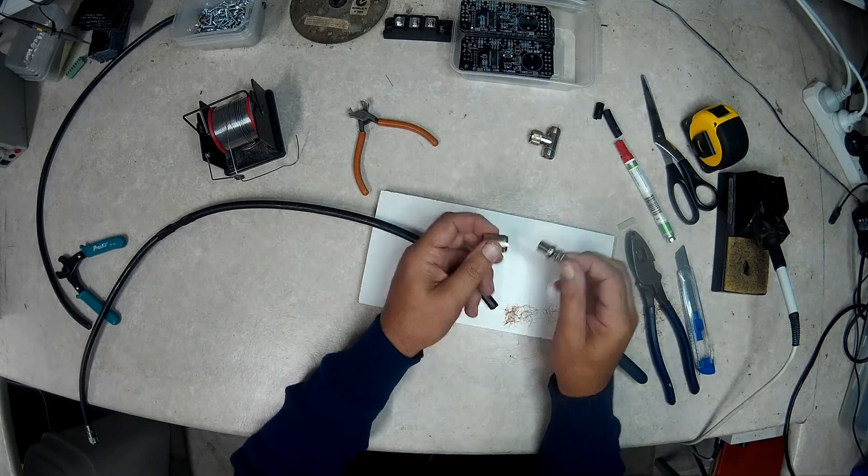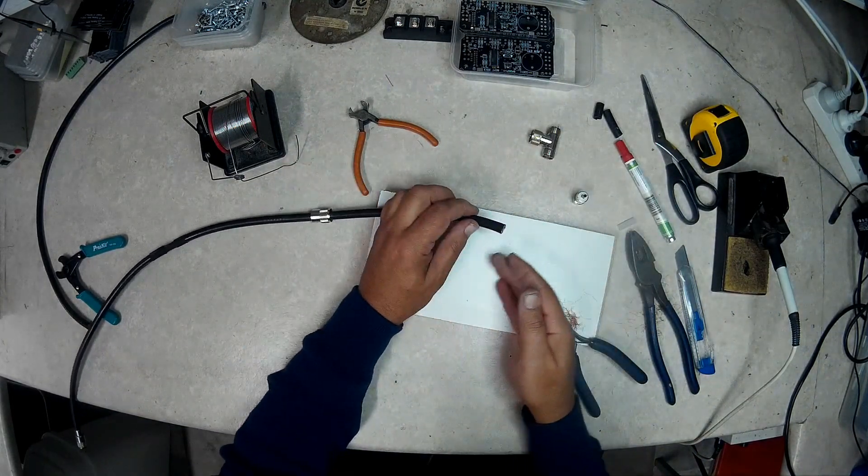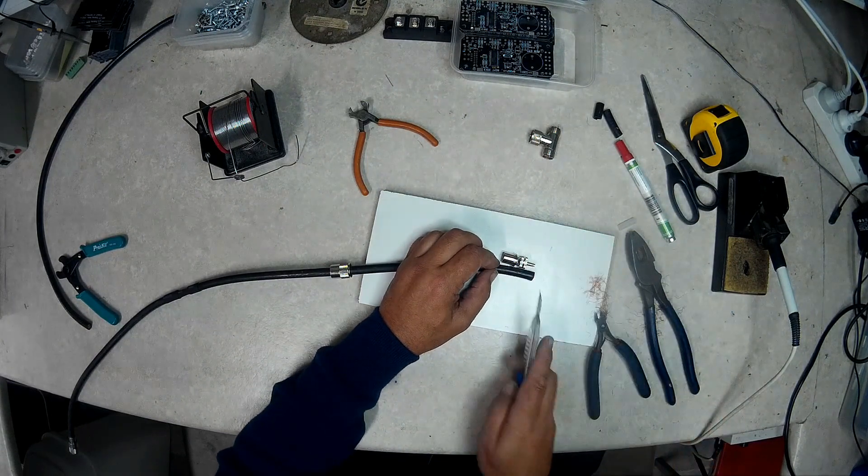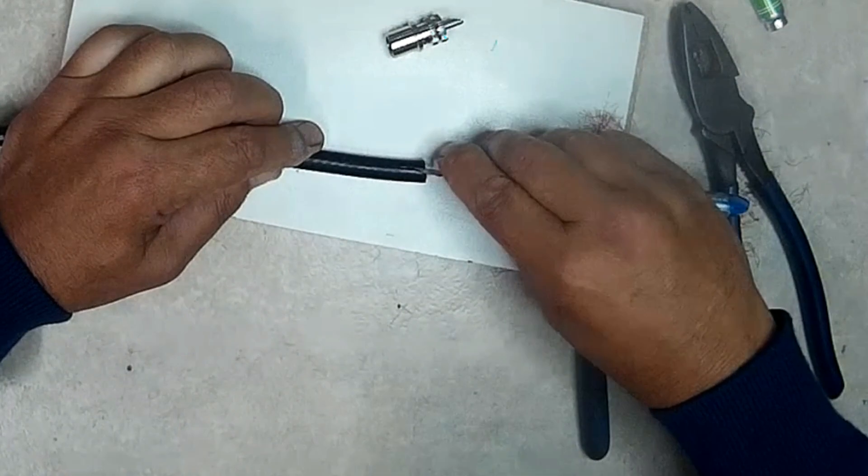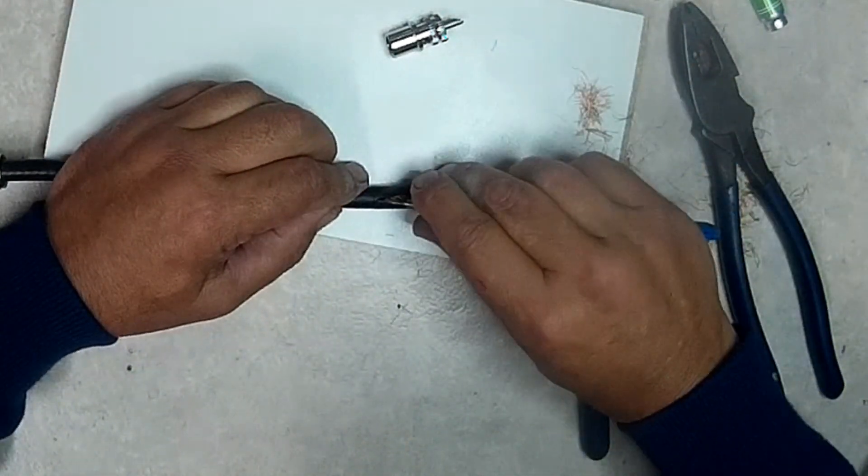We move on to the second PL259 connector, as before sliding the outer part onto the cable first. Then trim away the sheath and the braid as before.